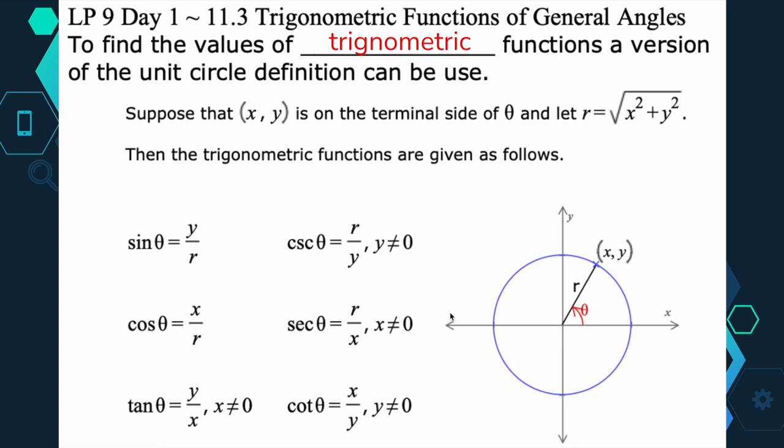But we can use a version of it that's pictured below. So suppose that we have coordinate (x, y) on the terminal side of an angle theta, and let r, which is our radius, equal the square root of x squared plus y squared. Okay, so that's the x and the y that are squared, and that's the radius.